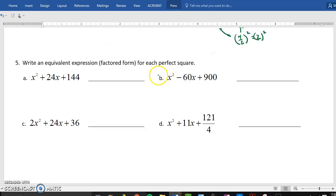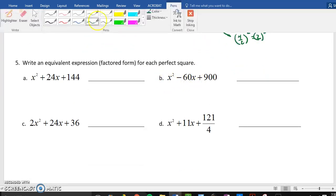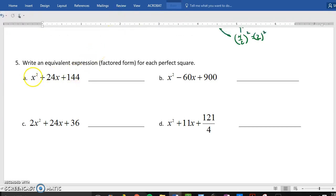Example five. What you have to see here, guys, is each of these, it tells you write an equivalent expression in factored form. And what factored form means is kind of like this form for each perfect square. So, for these, you're not going to have any numbers on the outside.